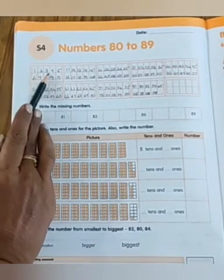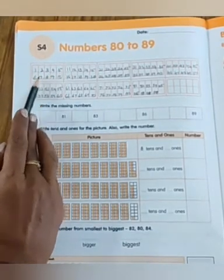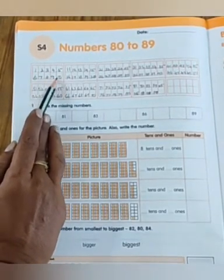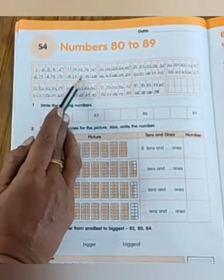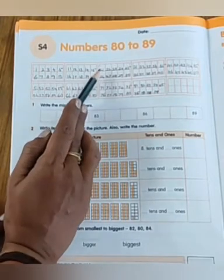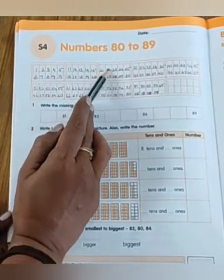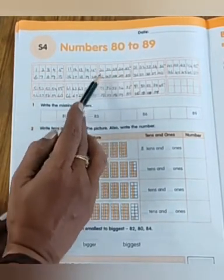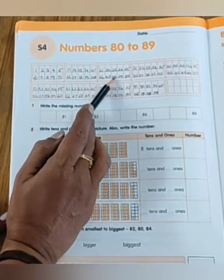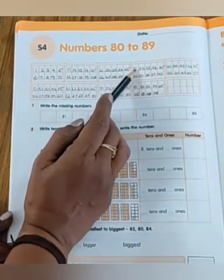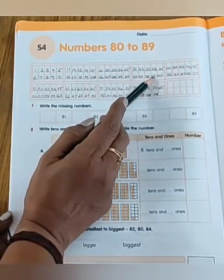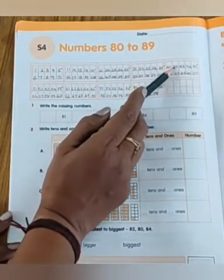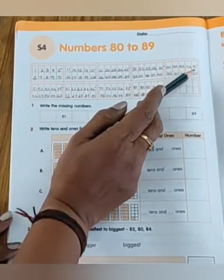1, 2, 3, 4, 5, 6, 7, 8, 9, 10, 11, 12, 13, 14, 15, 16, 17, 18, 19, 20, 21, 22, 23, 24, 25, 26, 27, 28, 29, 30, 31, 32, 33, 34, 35, 36, 37, 38, 39, 40, 41, 42, 43, 44, 45.